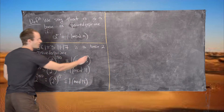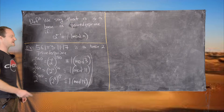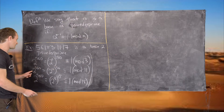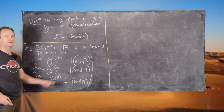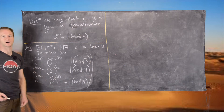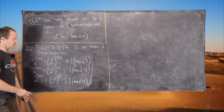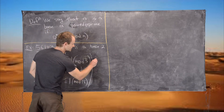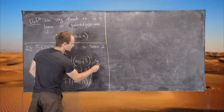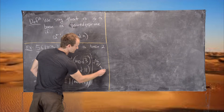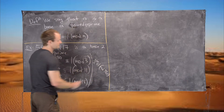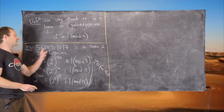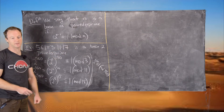Putting all of these things together: since 2 to the 560 is 1 mod 3, 1 mod 11, and 1 mod 17, it follows that 2 to the 560 is congruent to 1 mod 561. In other words, 561 is a base-2 pseudoprime.